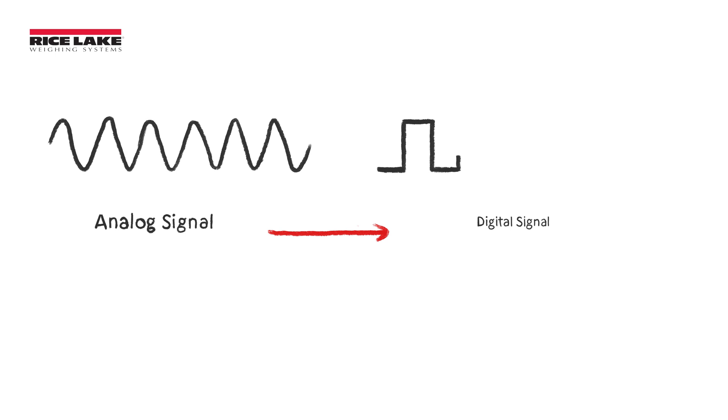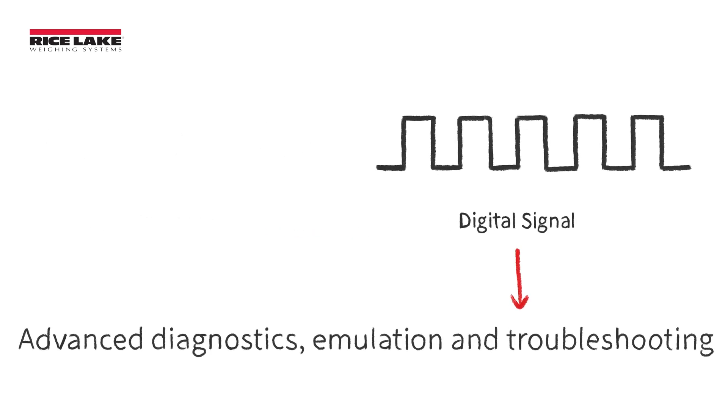A digital junction box can receive signals from analog load cells and convert them to a digital format, allowing advanced diagnostics, emulation, and troubleshooting.